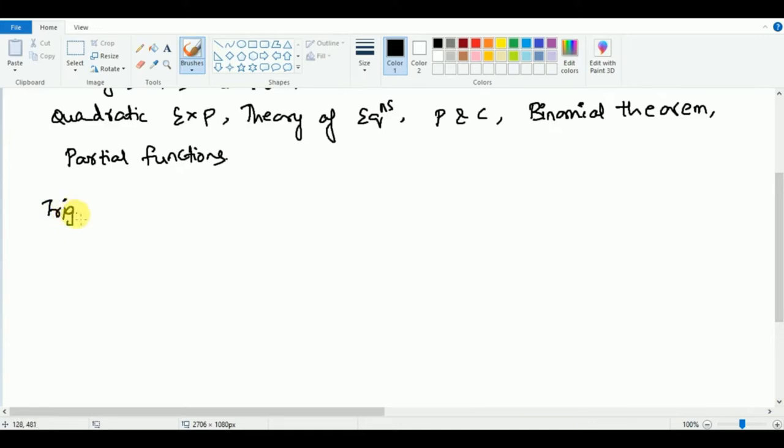Now let's see what you have to cover under trigonometry. Coming to trigonometry, you have to cover trigonometric ratios up to transformations, trigonometric equations, inverse trigonometric functions, hyperbolic functions, and properties of triangles. The next chapter is vector algebra.